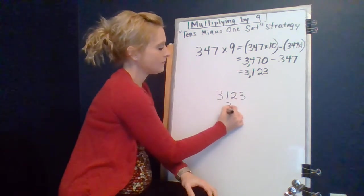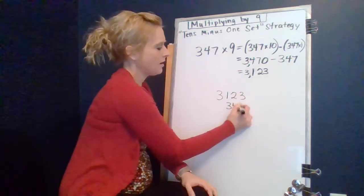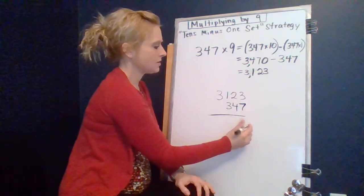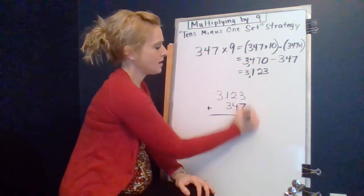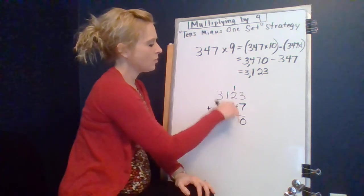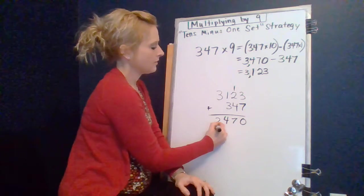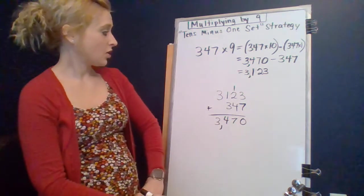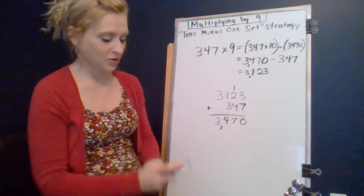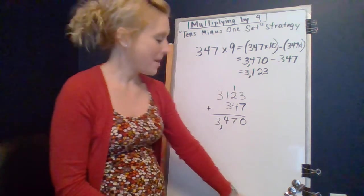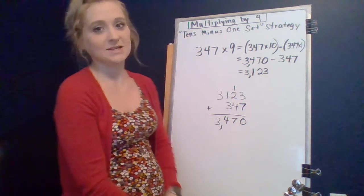So, 3,123. Let's add that 347 back just to make sure I get back what I started with. If I did, then I need to subtract it correctly. So 3 plus 7 is 10, regroup, 4, 5, 6, 7, 3, 4. I did. I subtracted correctly. Thank goodness, because then I would look kind of silly up here being your math teacher and not being able to subtract that quickly in my head.